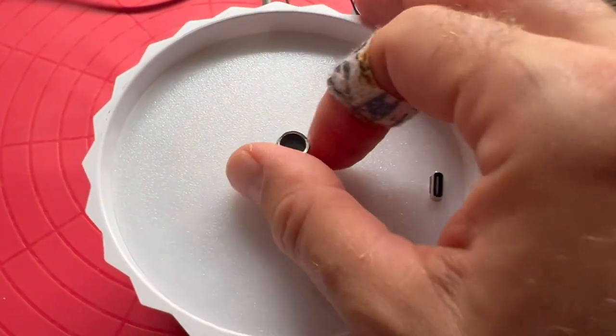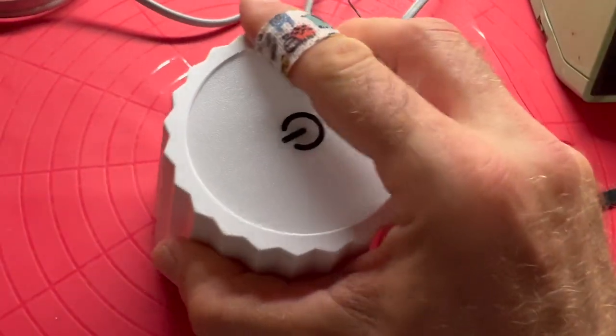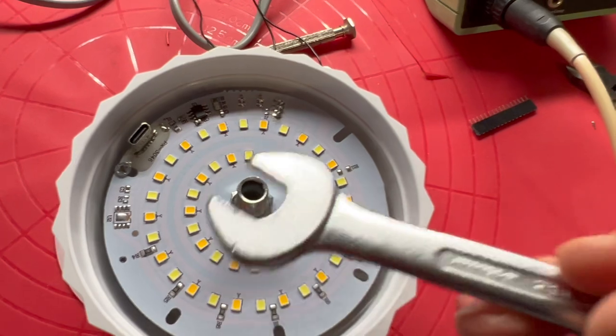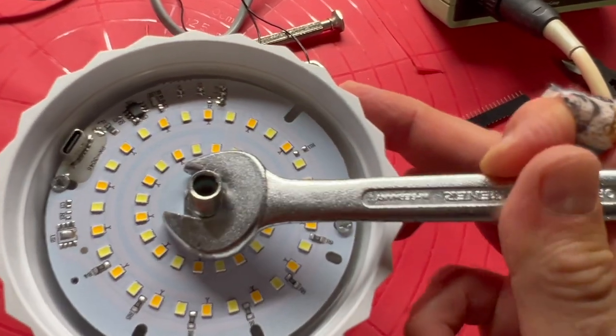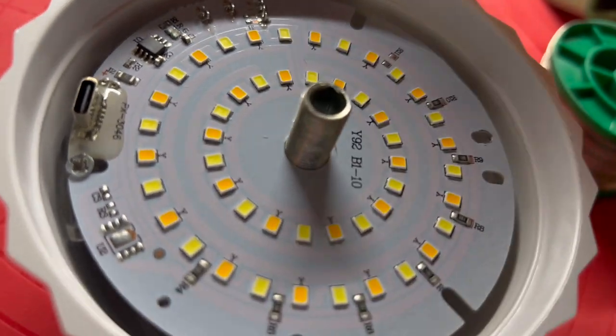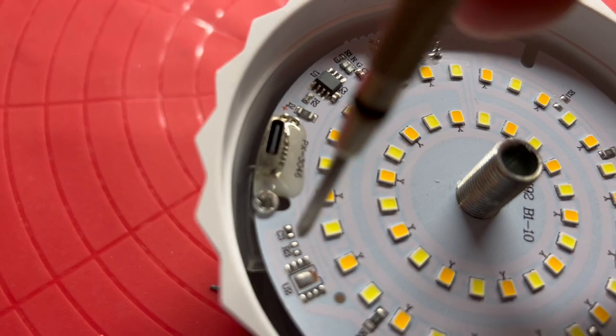So take apart the upper lid and on the inside here, take away this screw and the other one.